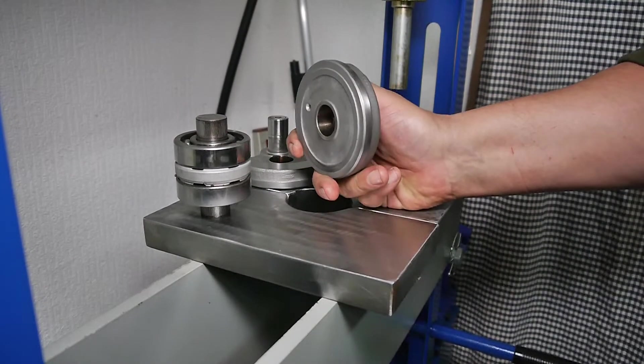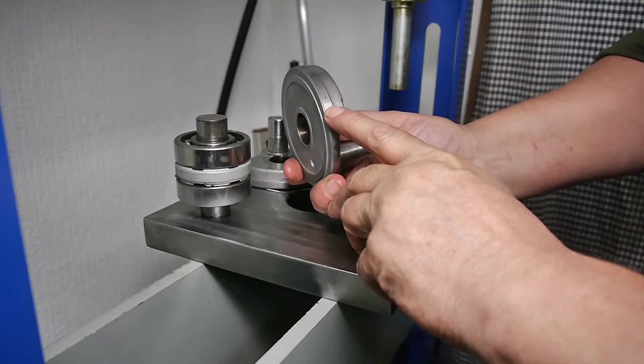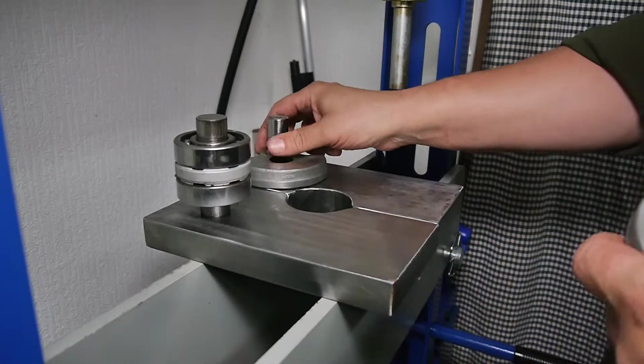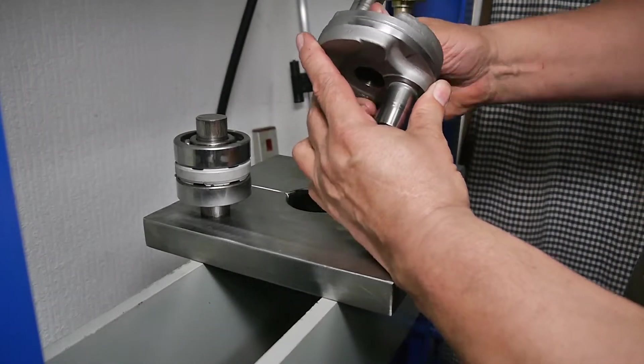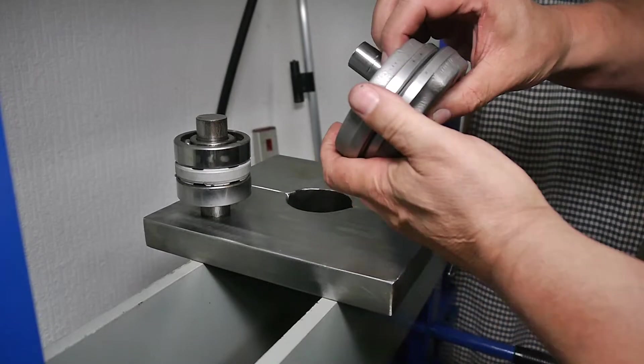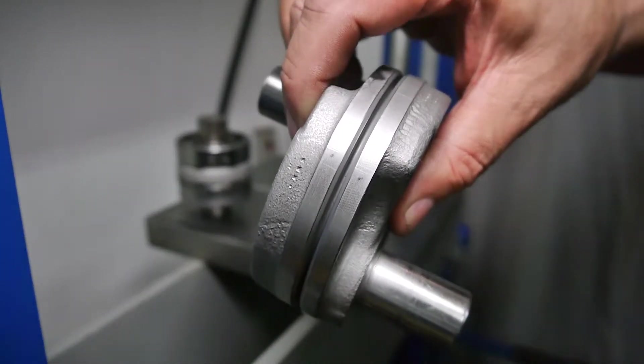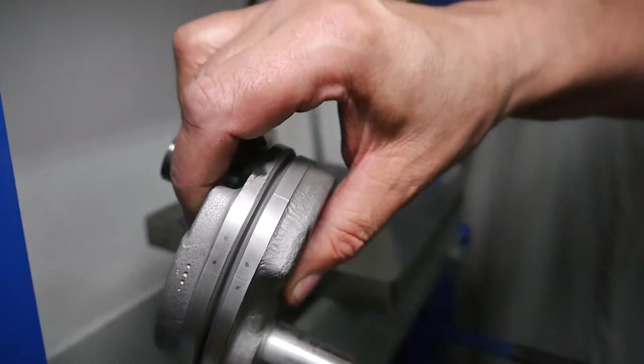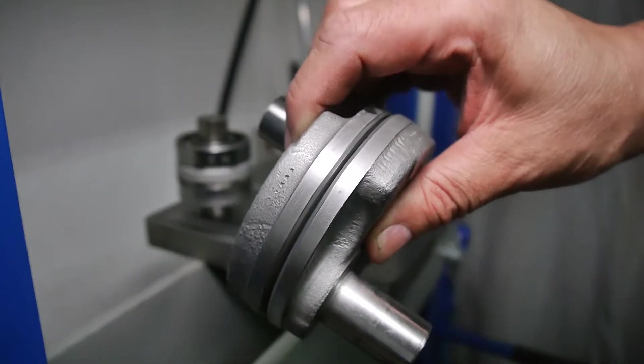Remember again, as I said earlier in the previous video, to mark the inner webs so you can get them 180 degrees off, so you've got a decent mark to follow as you can see there. Make sure they're there permanently so they don't rub off.